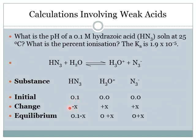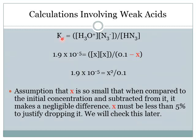Initially I have 0.1 M of hydrozoic acid and zero for both products. I'll lose a certain amount X from the reactant and gain X for each product. At equilibrium I have 0.1 − X for the reactant and X for each product. The Ka expression is my two products — H₃O⁺ and N₃⁻ — divided by the reactant (ignoring water): Ka = [H₃O⁺][N₃⁻] / [HN₃]. Substituting: 1.9 × 10⁻⁵ = X · X / (0.1 − X).